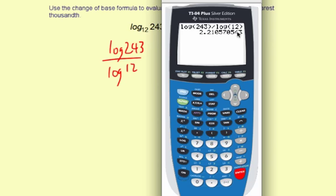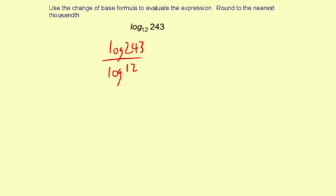2.21057 and so forth. Rounded, it's going to be 2.211. All right, there's your answer.